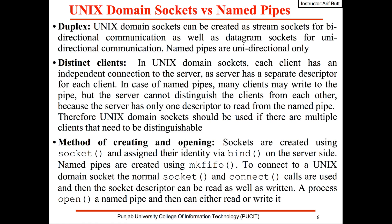Therefore, Unix domain sockets should be used if there are multiple clients that need to be distinguishable. The third difference is about creating and opening: sockets are created using socket() and assigned their identity using bind() on the server side, while named pipes are created using mkfifo() or mknod(). To connect to a Unix domain socket the normal socket() and connect() calls are used, and then the socket descriptor can be read and written. For named pipes, a process opens the pipe and can either read or write it.